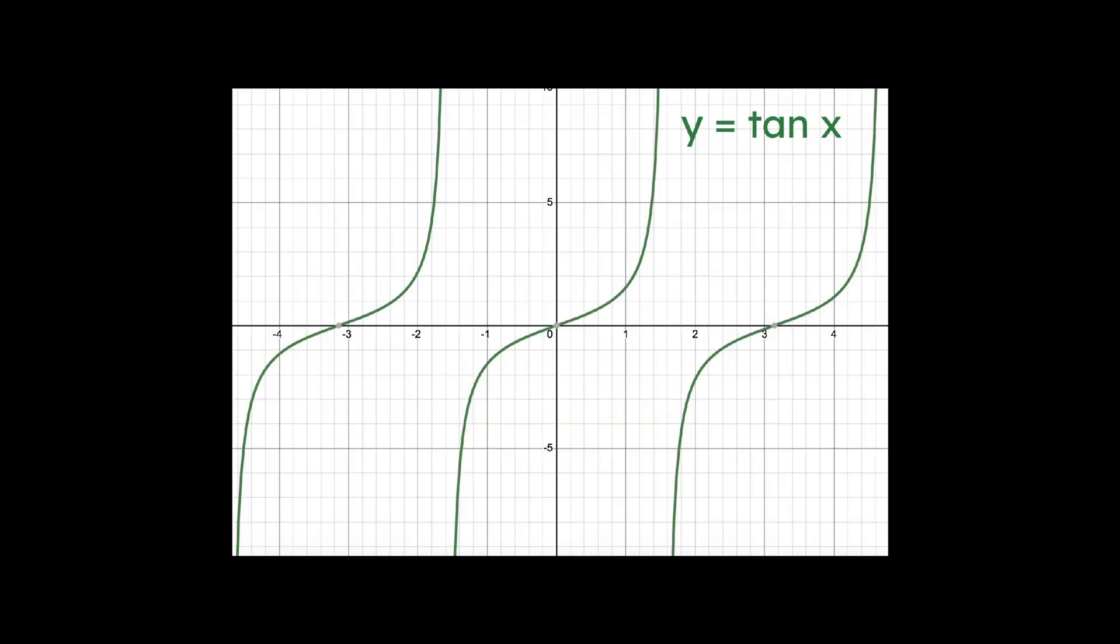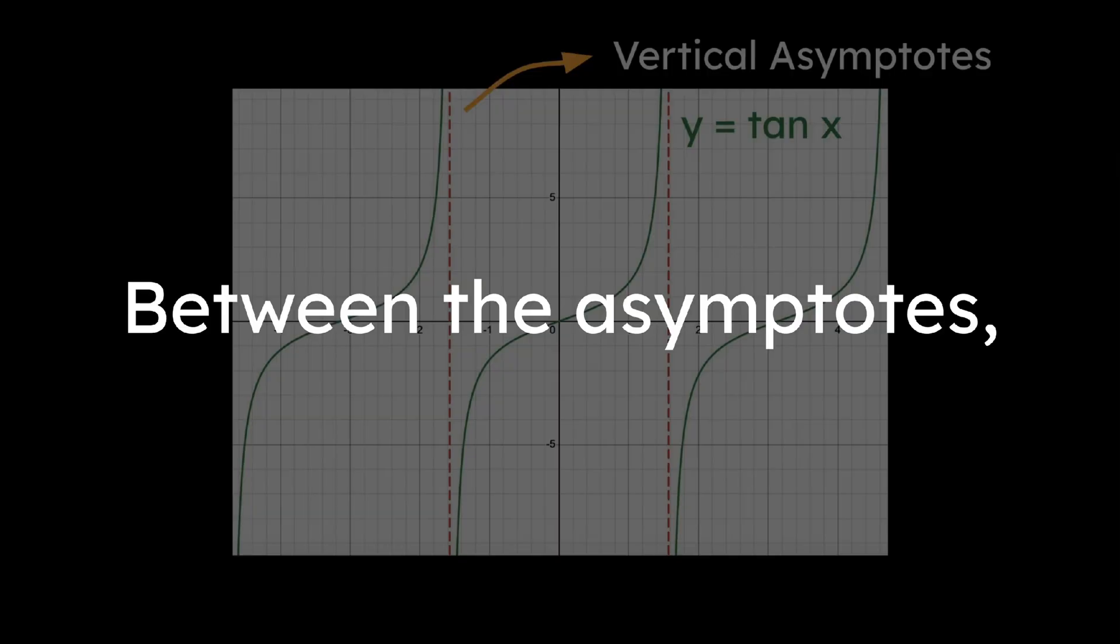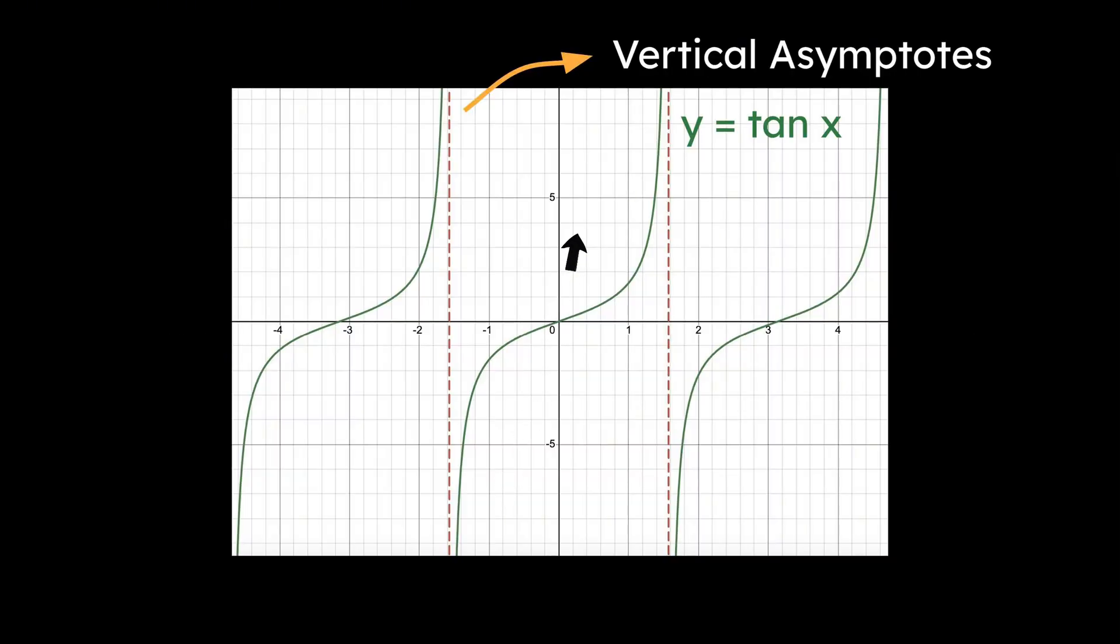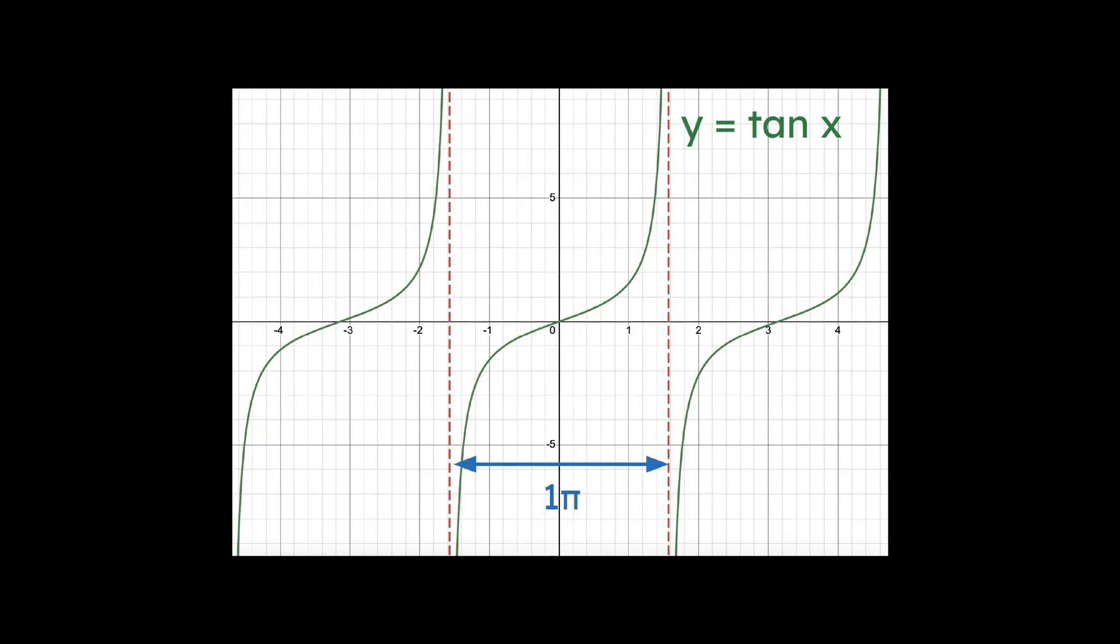Tangent, however, is sine x over cosine x, and since cosine x equals 0 sometimes, the tangent graph has vertical asymptotes. Between the asymptotes, tangent increases from negative infinity to positive infinity and repeats every 1 pi radians.